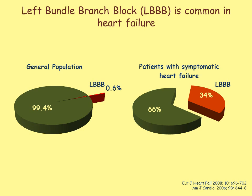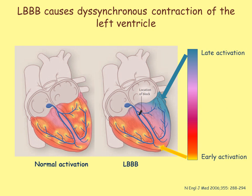Patients with symptomatic heart failure on optimal medical therapy and persistent symptoms should have an ECG taken. Left bundle branch block, although relatively rare in the general population, is frequent in patients with symptomatic heart failure. Up to one-third of symptomatic patients may have or develop evidence of this conduction abnormality. If the ECG shows a left bundle branch block pattern with a wide QRS complex, the patient may be a candidate for a CRT device.